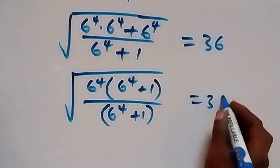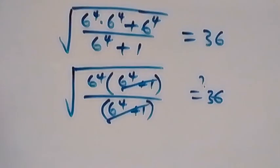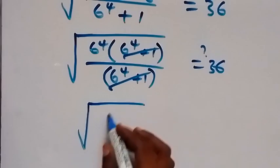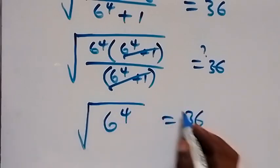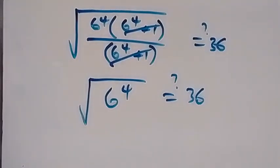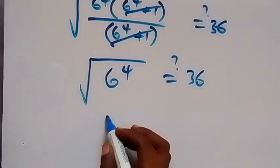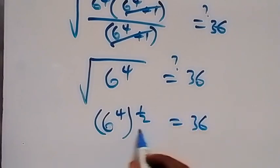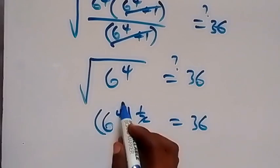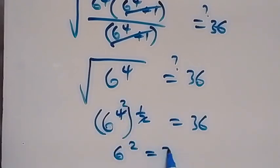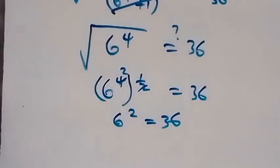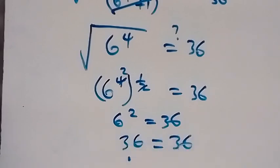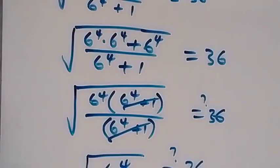This cancels out, and we get the square root of 6 raised to power 4, which equals 36. The square root can be written as a power of one half, so we have 6 raised to power 4, raised to power one half. Multiplying the powers, 4 times one half gives 2, so we have 6 squared, which equals 36. And 6 squared is indeed 36, so the left-hand side equals the right-hand side.